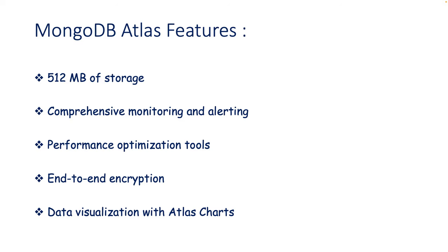MongoDB Atlas is a database-as-a-service. If you are using the trial version, by default you will get 512 MB of storage and you will also get features like monitoring and alerting, performance optimization tools, end-to-end encryption, and data visualization with Atlas Charts.